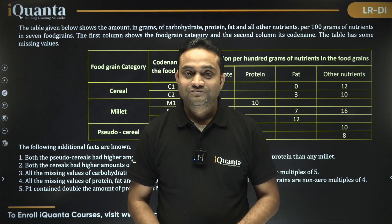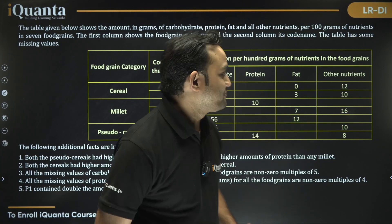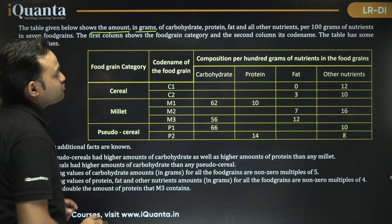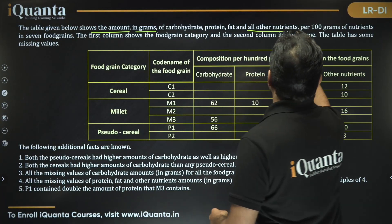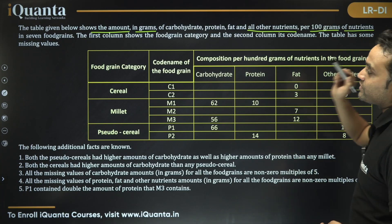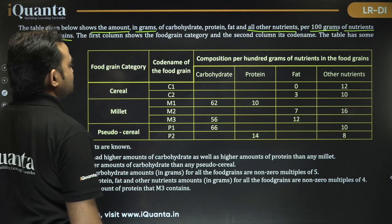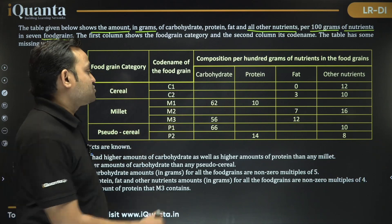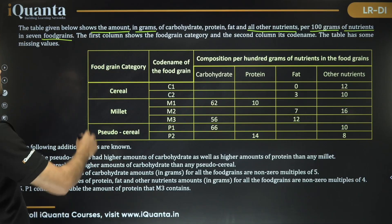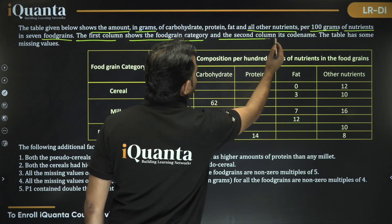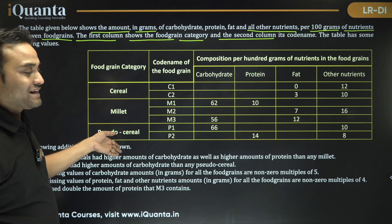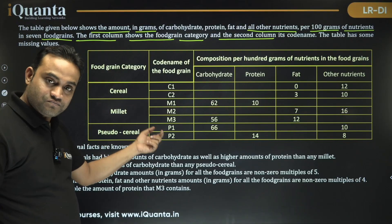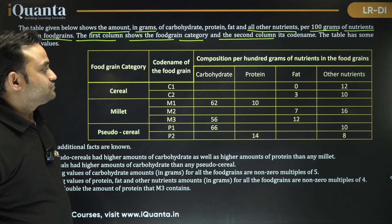This is a CAT 2024 LRDI set from Slot 3. The table shows the amount in grams of carbohydrate, protein, fat, and other nutrients per 100 grams in 7 food grains. Each row adds up to 100. The food grain categories are: cereals C1 and C2, millets M1, M2, M3, and pseudo cereals P1 and P2.